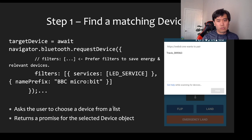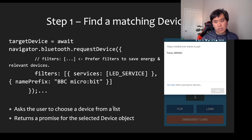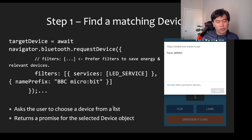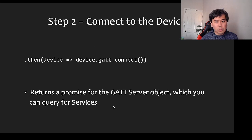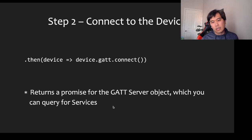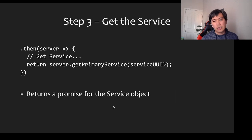To find a matching device, step one: call navigator.bluetooth.requestDevice, filtering by name prefix 'BBC micro:bit' so only micro:bit devices show. We also filter to only the LED service. Step two: use device.gatt.connect, then once connected get the service — you need to know the service UUID.